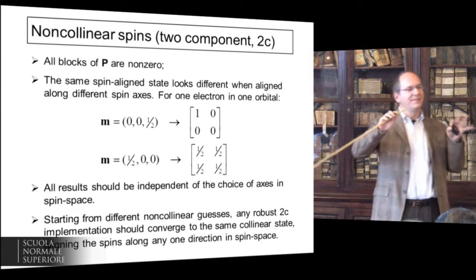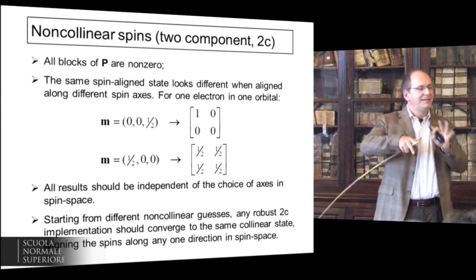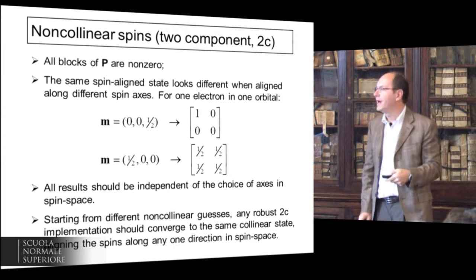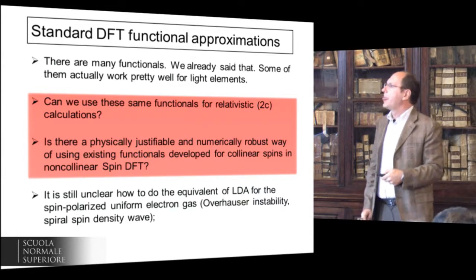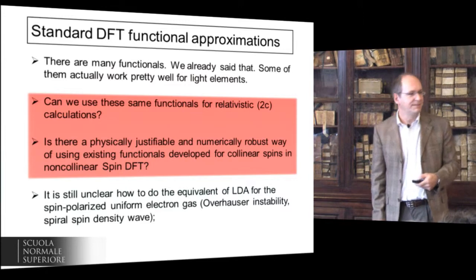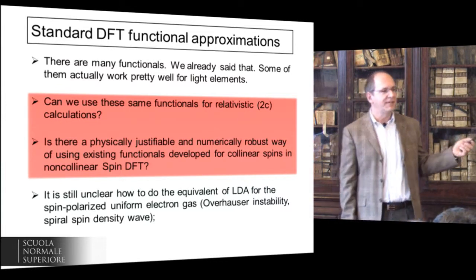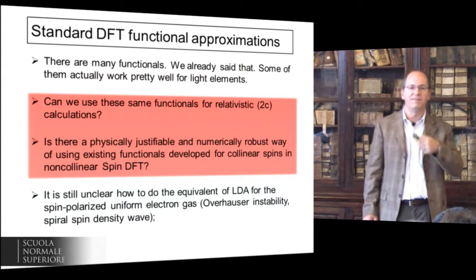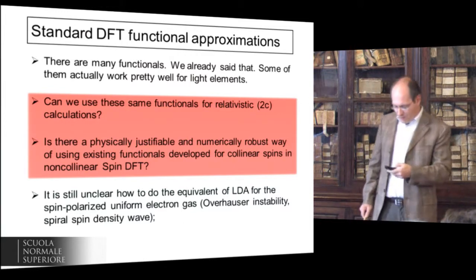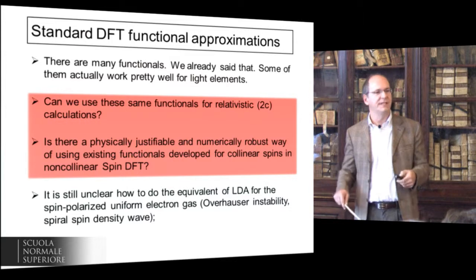Even better, if you start from different non-collinear guesses and want to converge to the same collinear state, the spin axis in which the collinear state finds itself at the end of the calculation should really not matter. Any robust implementation should give you this. Now, many functionals work pretty well for light elements. Should we throw them all away and start developing functionals that understand the scalar charge density and the vector magnetization density? Nobody is doing this. So is there a physically justifiable, numerically robust way of using existing functionals for non-collinear two-component spin-density functional theory calculations?